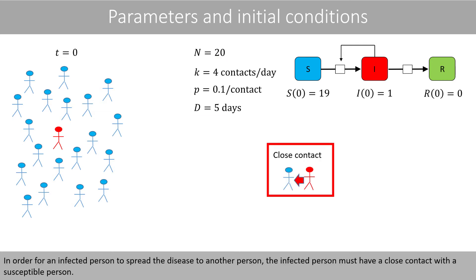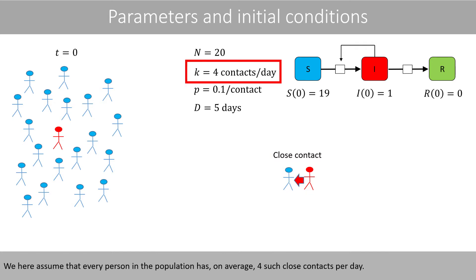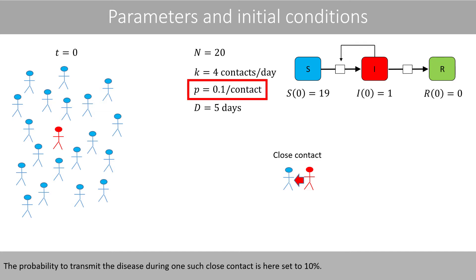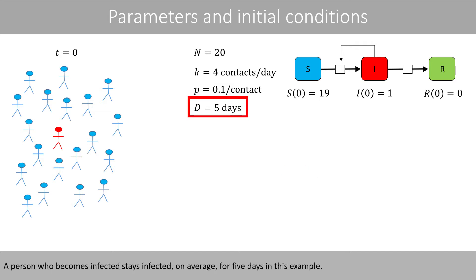In order for an infected person to spread the disease to another person, the infected person must have a close contact with a susceptible person. We here assume that every person in the population has, on average, four such close contacts per day. The probability to transmit the disease during one such close contact is here set to 10%. A person who becomes infected stays infected, on average, for five days in this example.